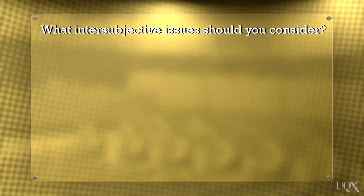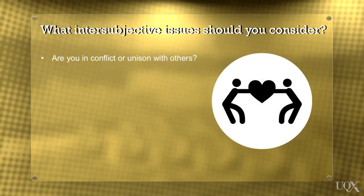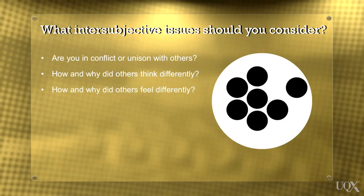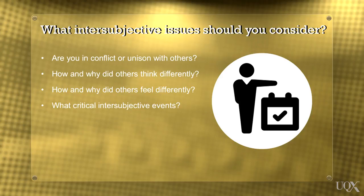What intersubjective social-relational issues should you consider? You need to consider how your subjective experience and the subjective experiences of others are either in conflict or in unison. How and why did others think differently to you? How and why did others feel differently to you? What are the critical intersubjective events, conflicts, alignments that might be important in explaining key aspects of your experience?